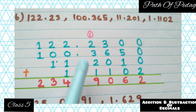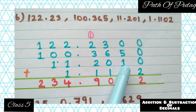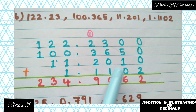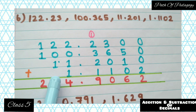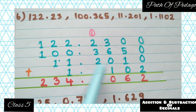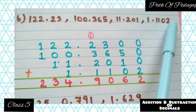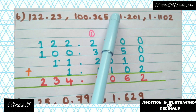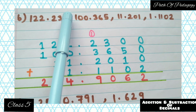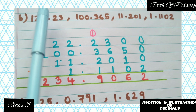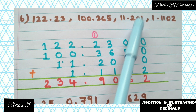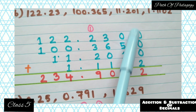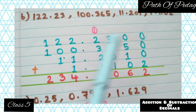Next is 1.1102 — write it down. The last decimal has four numbers after the decimal point. This one has three, this one has three, and this one has two. So you have to add two zeros to 122.23, one zero to 100.365, and one zero to 11.201 — all to the extreme right.